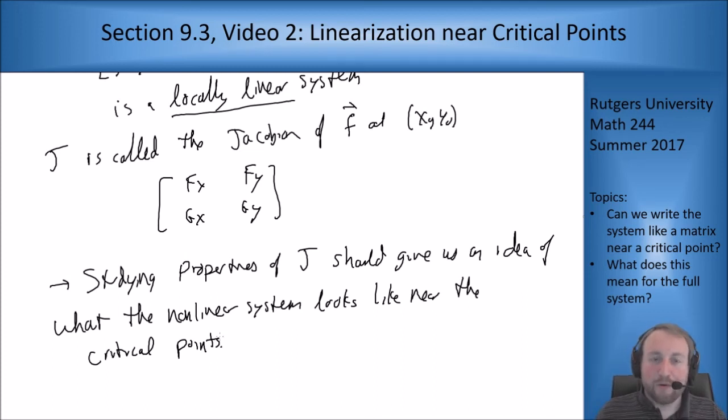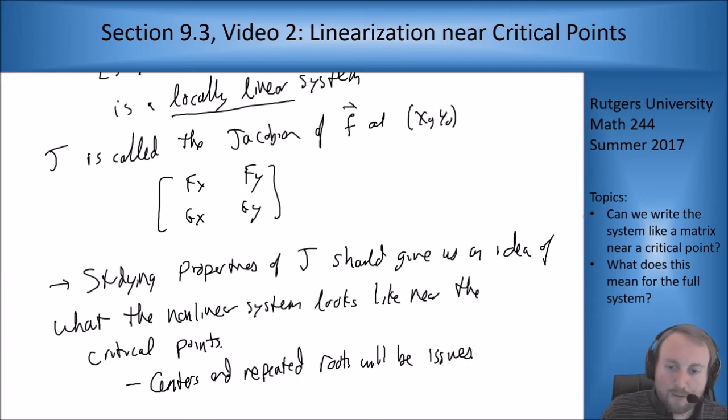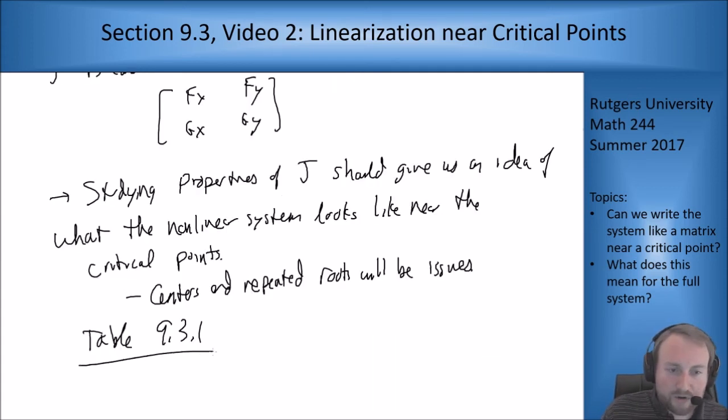Again, centers and repeated roots are going to be issues but you'll generally have to use numerical methods to figure out the distinction there because there's nothing you can do analytically. The main thing you want to look at is table 9.3.1 in the book which tells you how you get from the linear system, this J, to the nonlinear system just based on going between the different types of equilibrium points. So take a look at that.